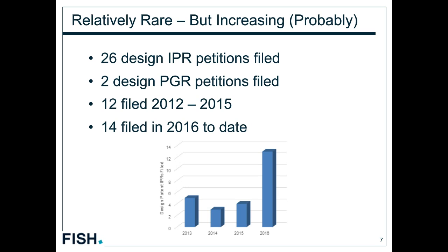I think this trend will continue even after the upcoming Supreme Court decision in Apple v. Samsung. The issue there is whether, when a design patent is applied only to a component of a product, damages should be apportioned or total profits awarded. If the Supreme Court limits damages, there may be some tempering of that upward trend, but the oral argument is coming up early October, so something to watch.